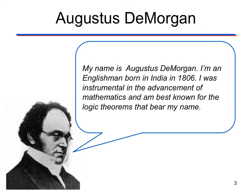On this page, we're going to learn a little bit more about Augustus DeMorgan. I'm going to read it in what I think his voice sounds like. My name is Augustus DeMorgan. I'm an Englishman born in India in 1806. I was instrumental in the advancement of mathematics and best known for the logic theorems that bear my name. Nailed it.